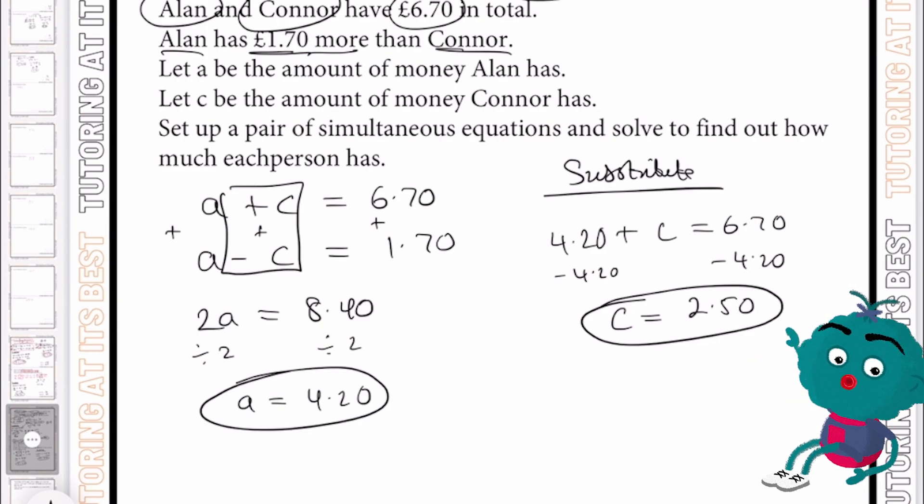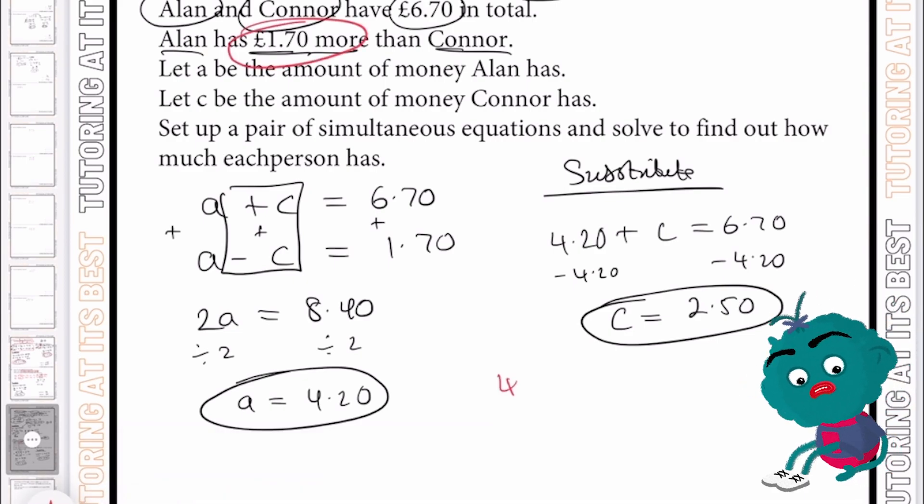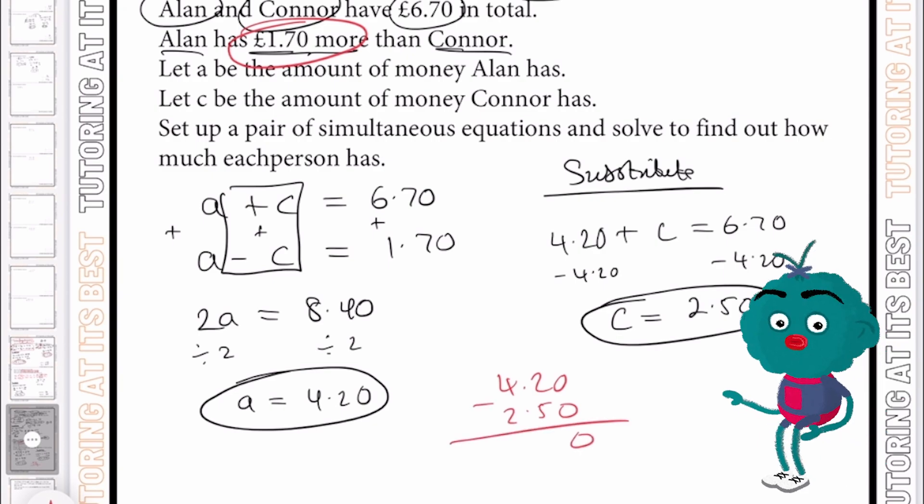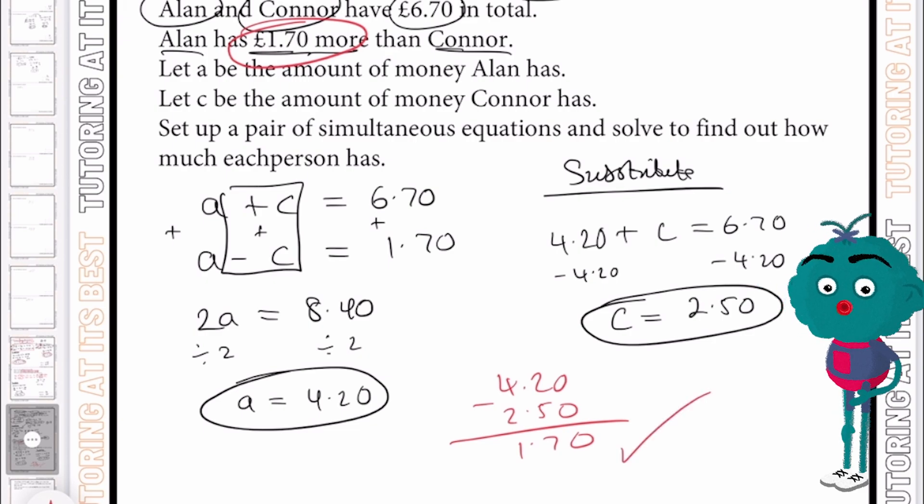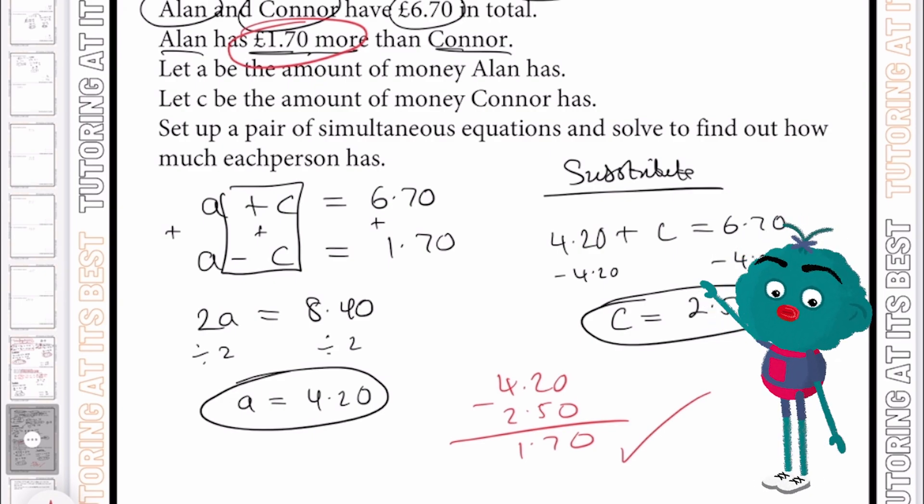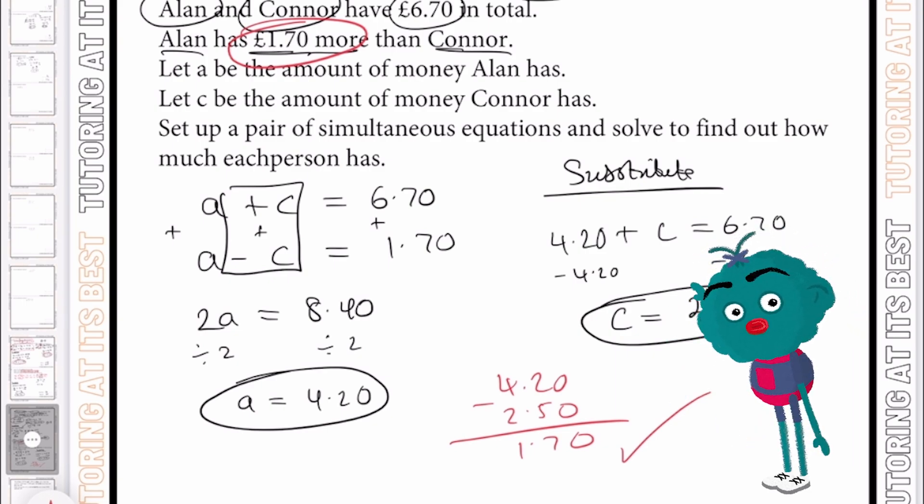And in order to check this, as we know that Alan had £1.70 more, we can simply subtract this out. And we now know that it is indeed £1.70 over. Perfect. So I hope you guys are understanding what I'm doing and how I'm breaking this down into smaller, more manageable steps. Don't forget to also check your answers to see if they balance. And if they do, you know you're on the right track.